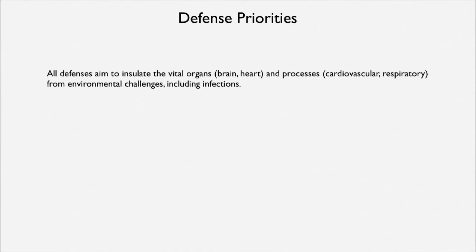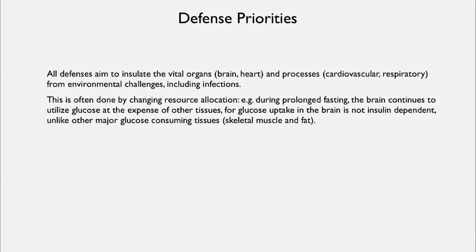That's often done by changing resource allocation. During prolonged fasting, the brain continues to get glucose, and for glucose uptake in the brain not to be insulin dependent, all of brain physiology needs to be changed in a way. Brain tissue has a different relationship to insulin than does, say, muscle tissue.